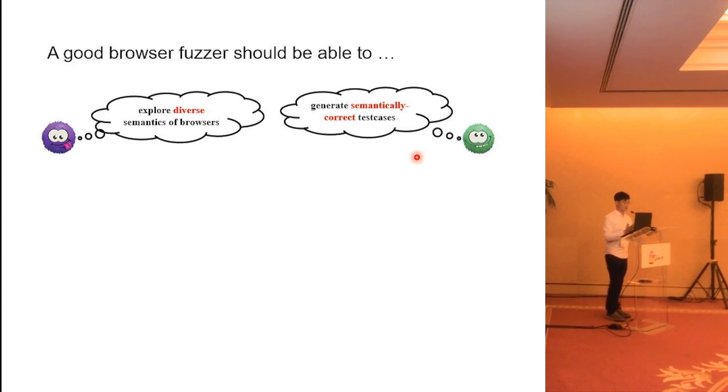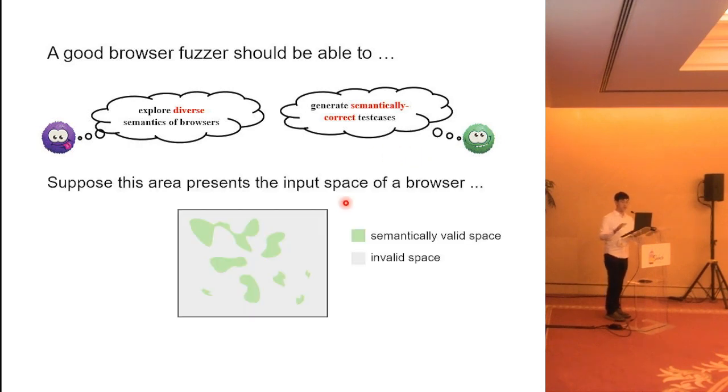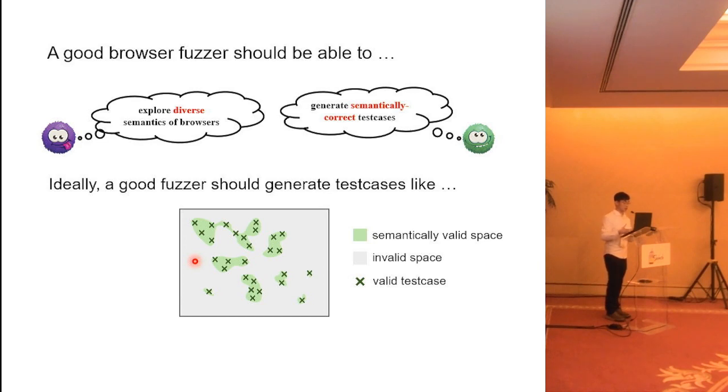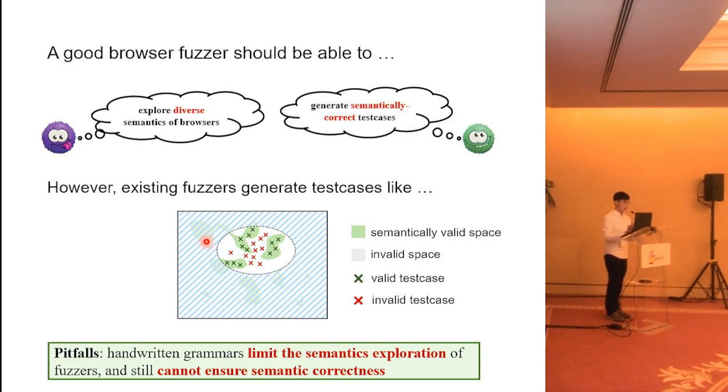A good browser fuzzer should be able to explore diverse semantics of browsers and generate semantically correct test cases. That's the common sense of fuzzing research. Let's put a figure to illustrate how fuzzers explore browsers' input space. Suppose this figure presents the input space of a browser, and the green area is the semantically valid input space, and the gray area is the invalid input space. Ideally, a good fuzzer should generate test cases like the green clauses in this figure. All the test cases are valid and cover diverse areas of valid input space.